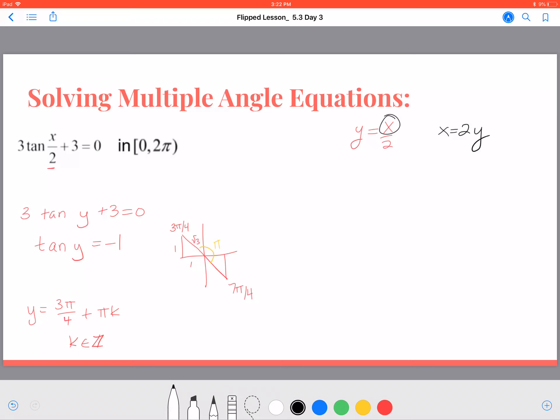And so I'm going to take this equation and say that x equals 2 times it. And so I get x equals 2 times 3 is 6 pi over 4 plus 2 pi k, where k is an integer. And we can rewrite that as x equals 3 pi over 2 plus 2 pi k.